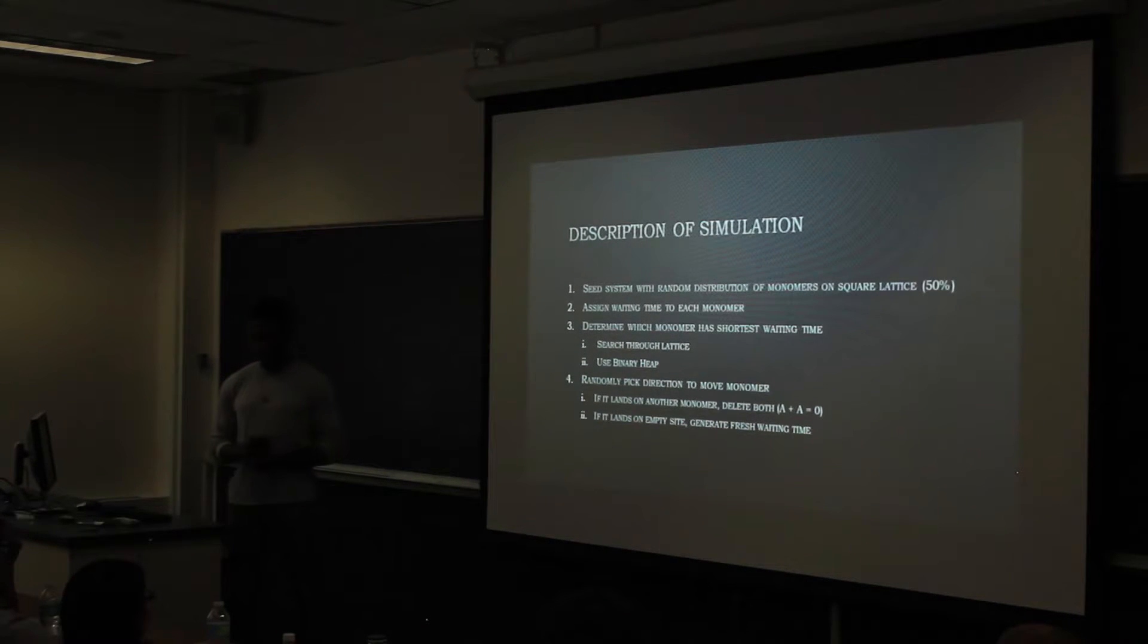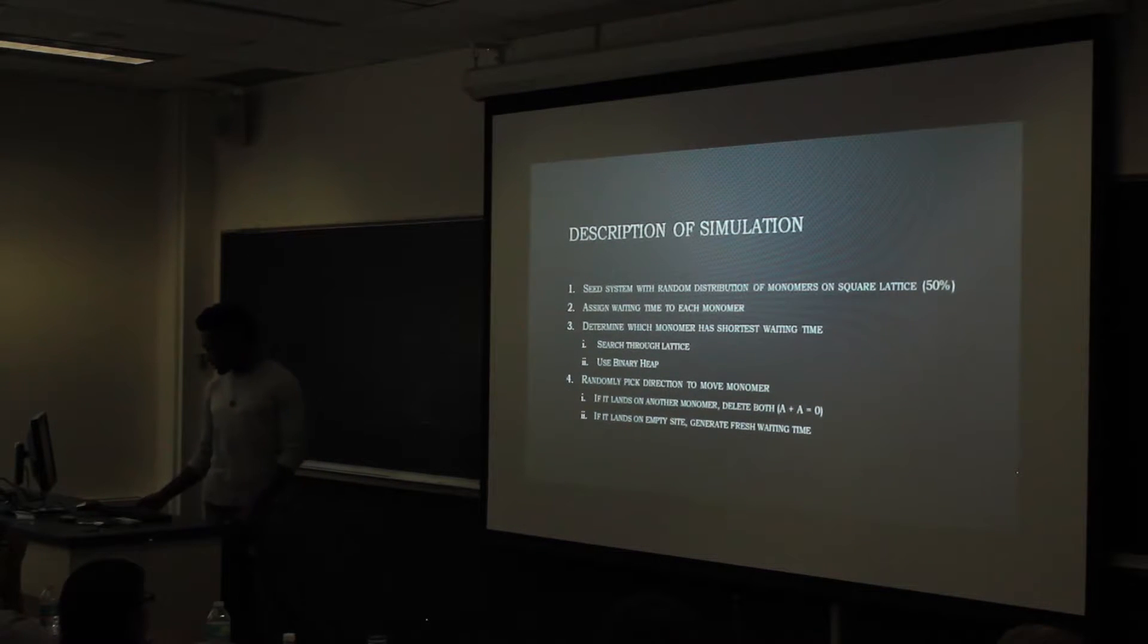Now my simulation, at the very beginning, it seeded the system with monomers and gave them all random numbers generated by the random number generator. And we determined which monomer had the lowest waiting time and had that choose a random direction to move. And if it landed on another monomer, it annihilated both of them. If it didn't, it just went back through the system and chose the monomer with the lowest waiting time to pick a random direction again.